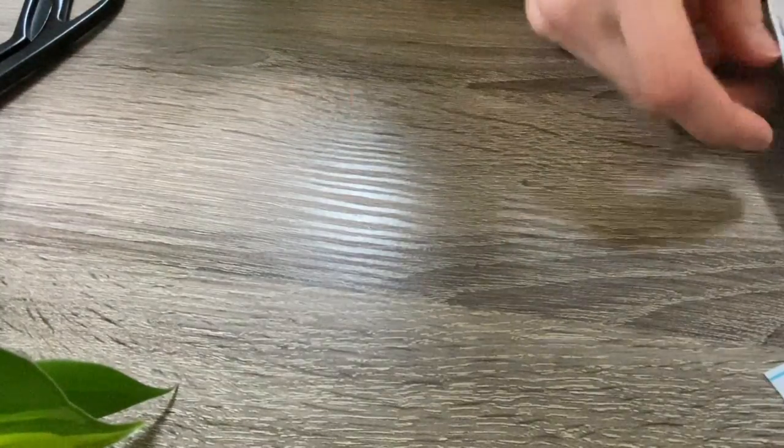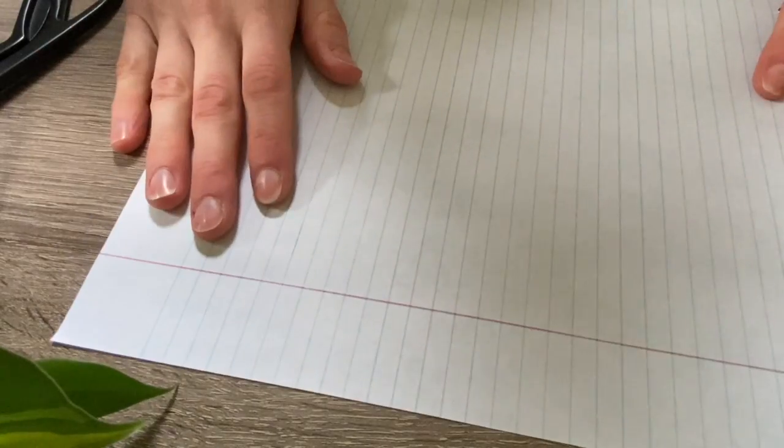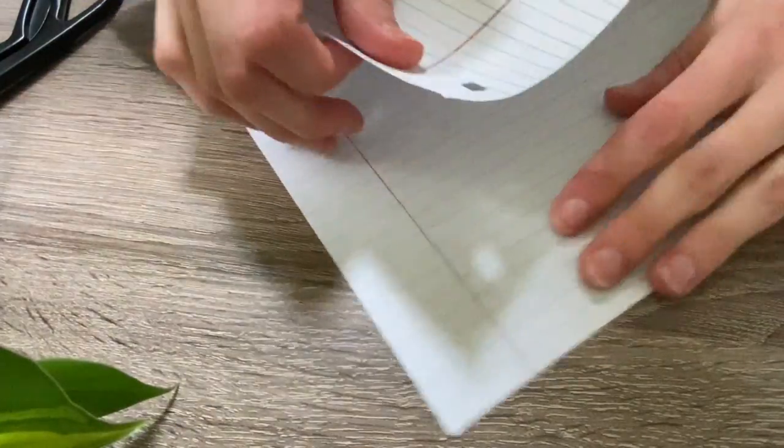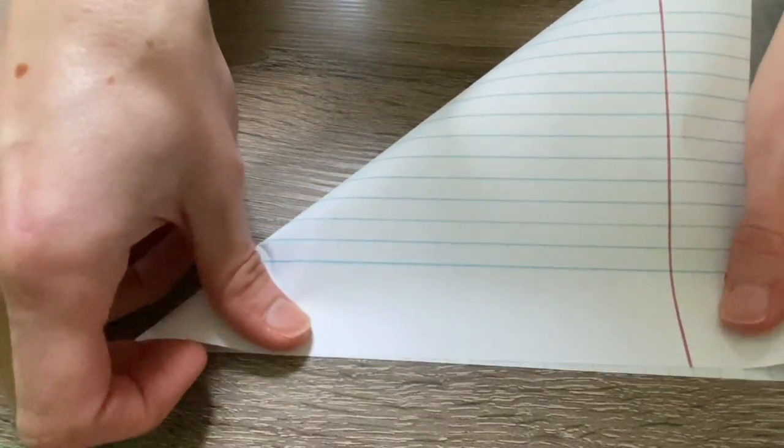To get square paper, we're going to take our notebook paper or printer paper or whatever we have that's not a square piece of paper, and fold it so that one side lines up like that.